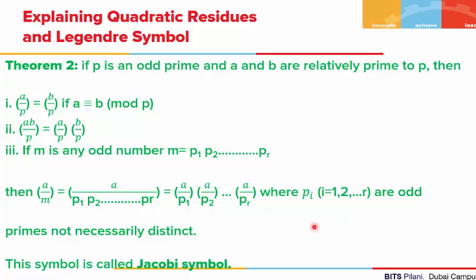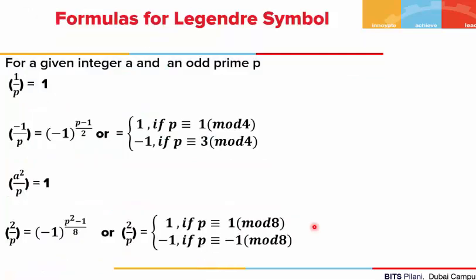Let's look at some formulas for the Legendre symbol which help us find the value of any given Legendre symbol. The first formula: (1/p) for any odd prime p is always 1. For (−1/p), we use (−1)^((p−1)/2), or equivalently: (−1/p) = 1 if p ≡ 1 (mod 4), and (−1/p) = −1 if p ≡ 3 (mod 4).